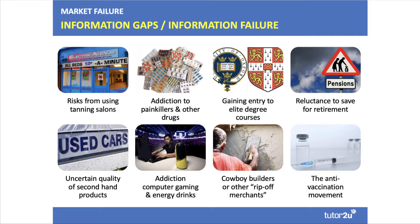Here are examples of information gaps: perhaps people underestimating consequences of using tanning salons, the economics of addiction to painkillers and other drugs, the complexity of finding the right university course, and the long-term issue of people not saving enough for retirement. Classic examples include the used car market — getting a 'lemon' or a 'peach' — addiction to computer games and energy drinks, cowboy builders in construction, and perhaps most topically, the anti-vaccination movement, largely focused in the United States but spread to other countries.